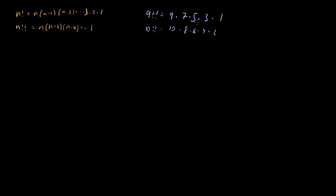One thing we can read off from this immediately is one really nice property of the double factorial function: n factorial is equal to n double factorial times n minus 1 double factorial.